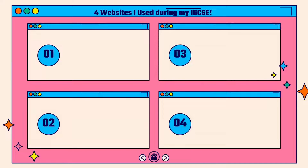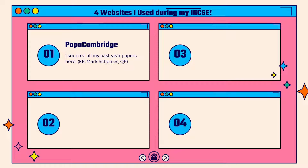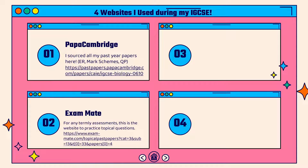Next, here are four websites I use for IGCSE. Number one is PastPapers Cambridge, which is where I source all my past papers — remember, past papers are free on the internet, including mark schemes, examiner reports, and question papers. Number two is ExamMate. Whenever I have a topical or term assessment in school, I use ExamMate to practice questions, or sometimes PhysicsMathsTutor — I'll link these below.